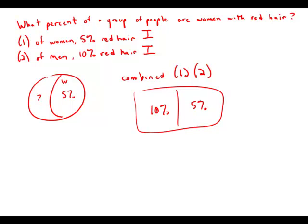How many men, how many women? Unfortunately we don't have any information about that. This group could be almost all men with just a few women, or it could be almost all women with just a few men. We have no idea. So even when we combine it, everything is still insufficient. We don't have enough information to answer the question, and this corresponds to answer choice E.